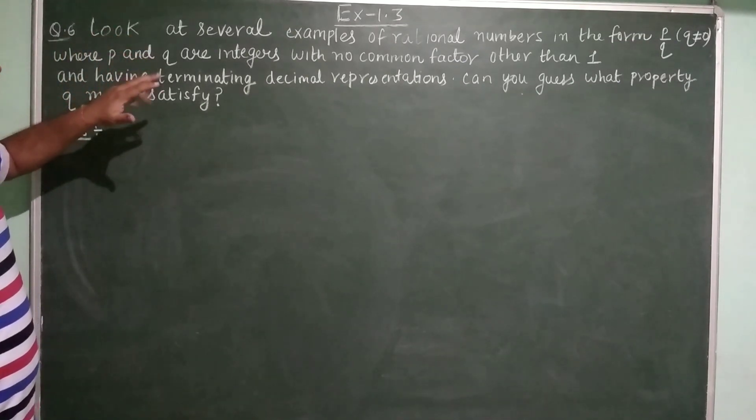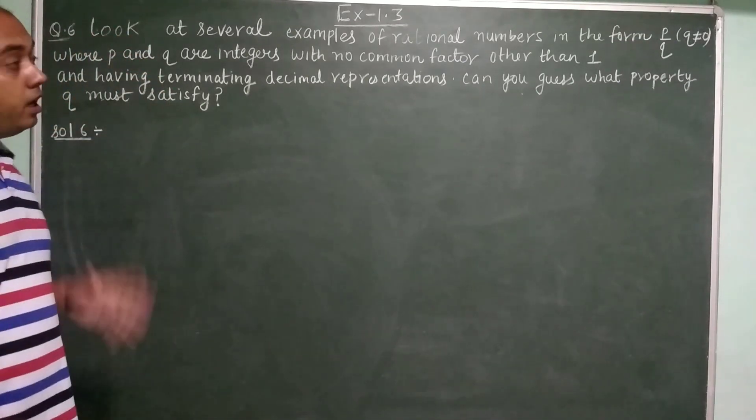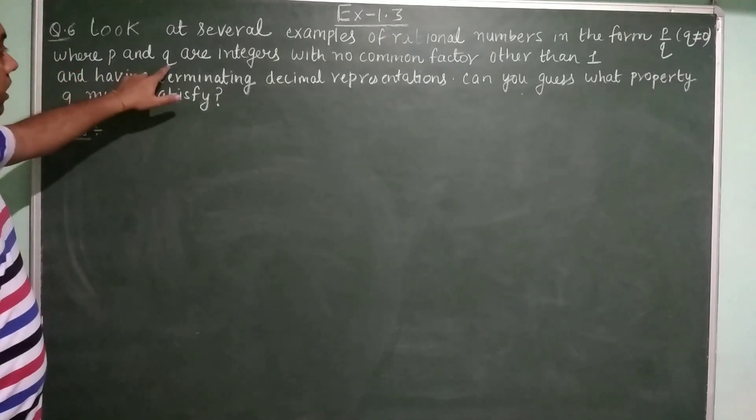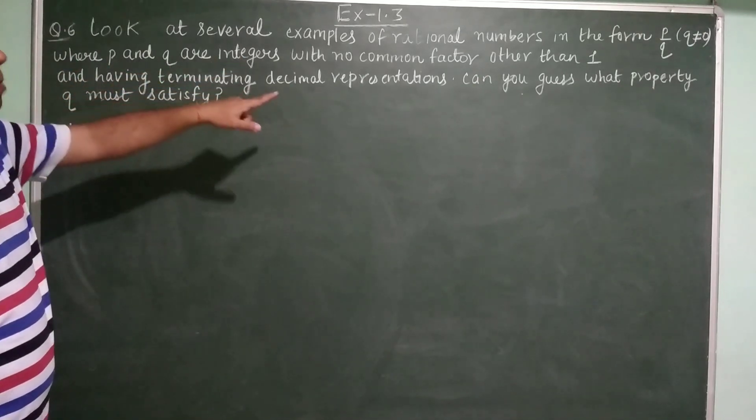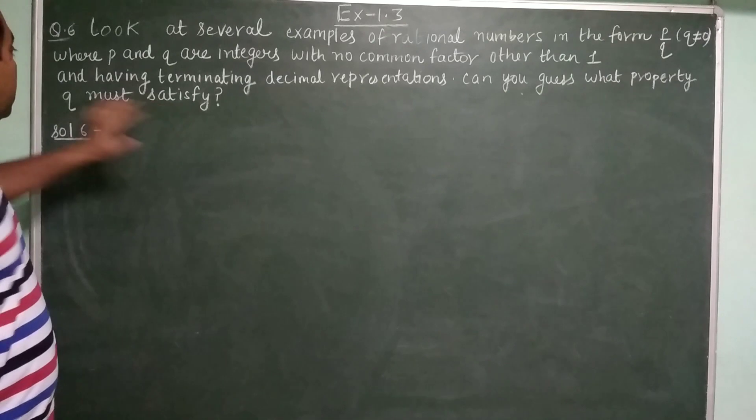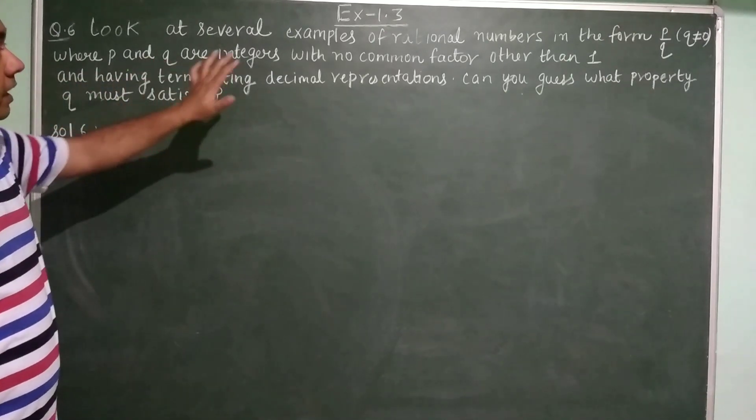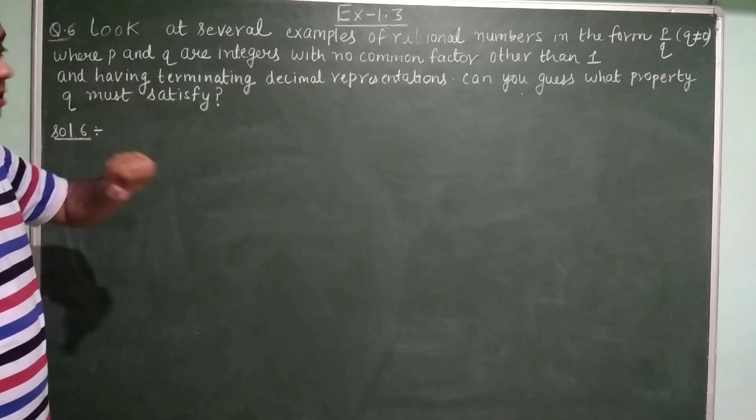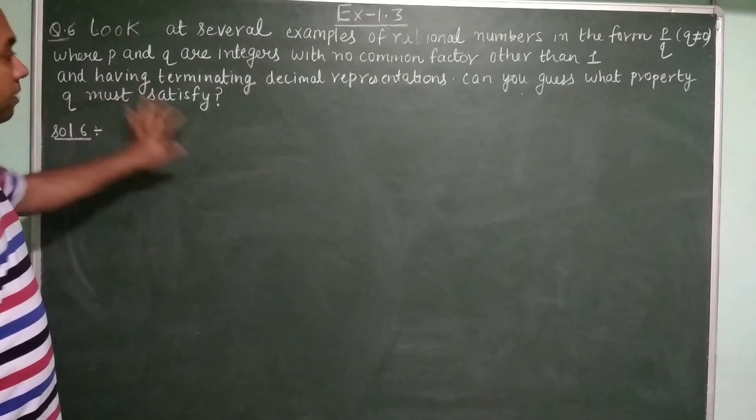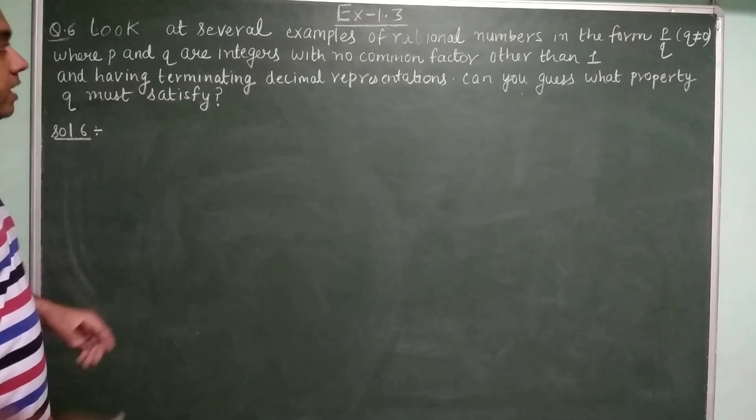Look at several examples of rational numbers in the form p upon q, where p and q are integers with no common factor other than 1, and having terminating decimal representations. Can you guess what property q must satisfy?